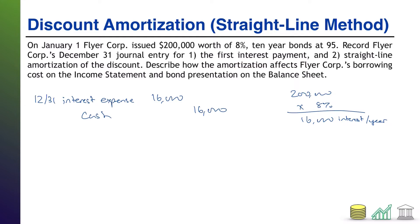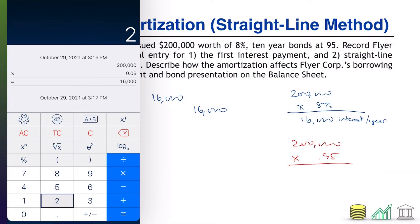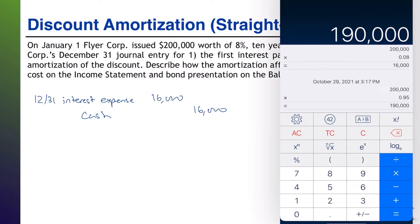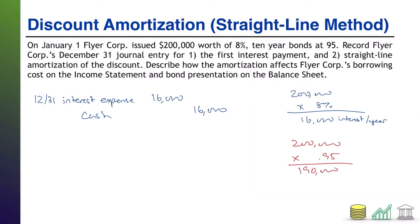Now we have to deal with the discount amortization portion. First thing we need to do is figure out what exactly the discount was in this situation. We had a $200,000 bond quoted at $95, which means we only received 95% of the face value. So $200,000 times 0.95 works out to $190,000 cash received. The difference between face value and cash received represents a $10,000 discount.